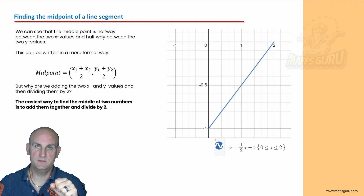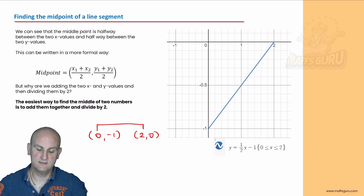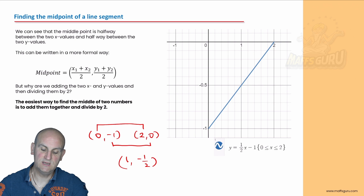Let's check that works with (0, −1) and (2, 0). For the x values: 0 and 2 — add them to get 2, halve it gives you 1. For the y values: −1 and 0 — add them to get −1, halve it gives −½. And that works every single time for every set of coordinates.